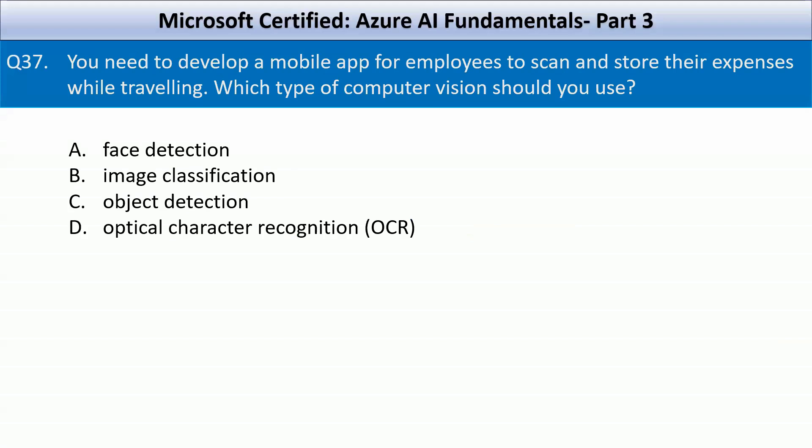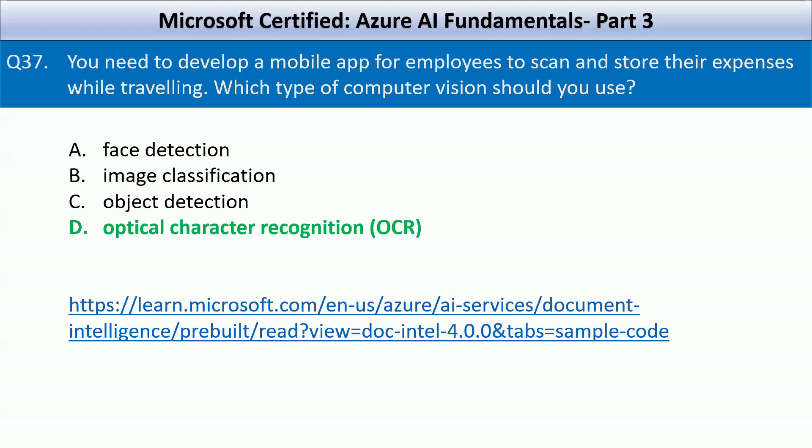Next question: You need to develop a mobile app for employees to scan and store their expenses while traveling. Which type of computer vision should you use? Your options are face detection, image classification, object detection, and optical character recognition. Since employees need to scan and store expenses, OCR will enable the mobile app to convert printed or handwritten text into digital format for storage and processing. There is a link on your screen — feel free to go through it to understand how to implement the requirement being discussed.